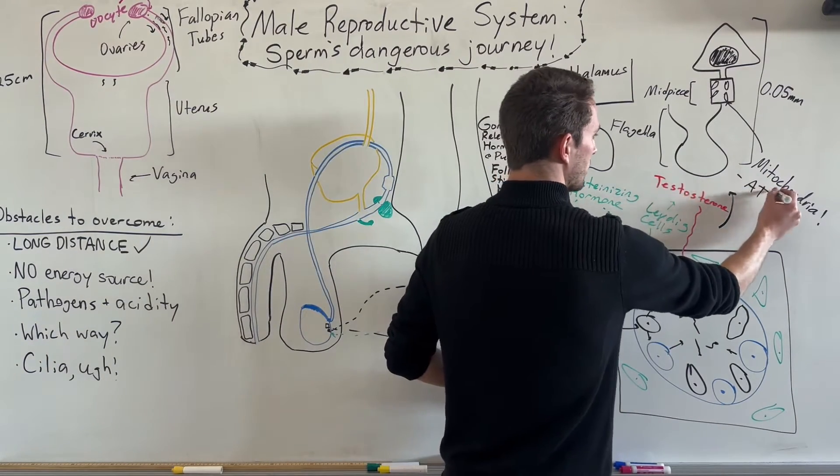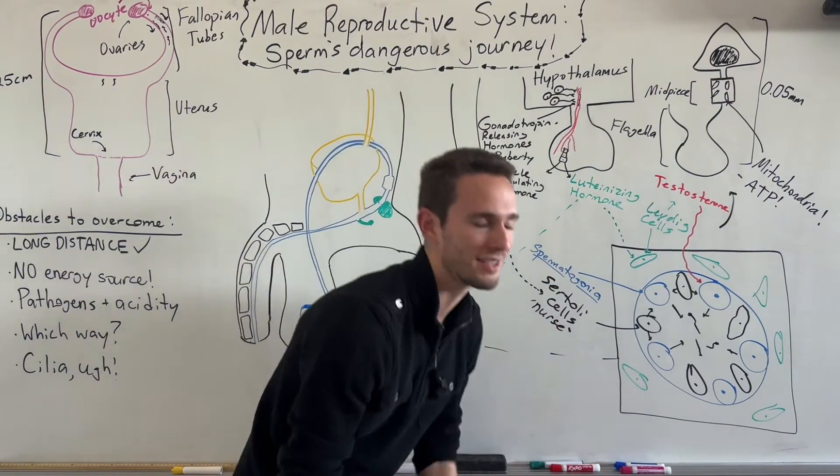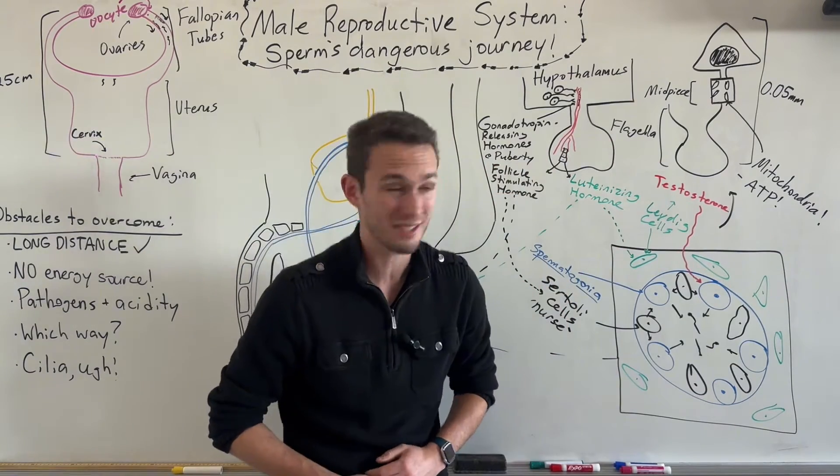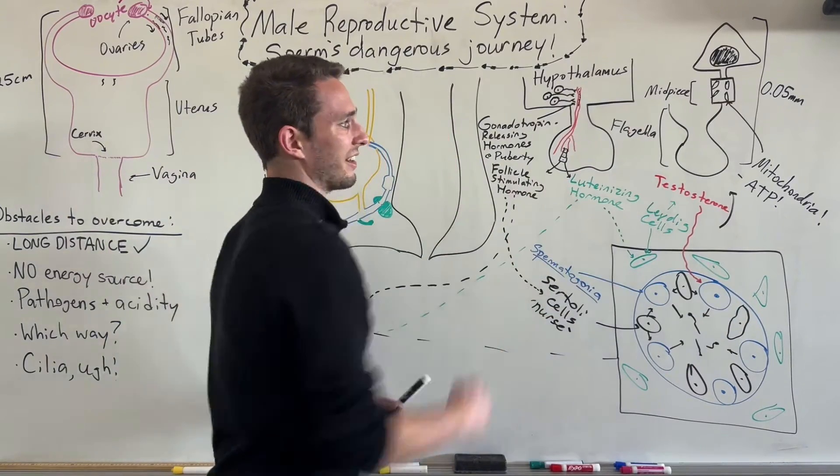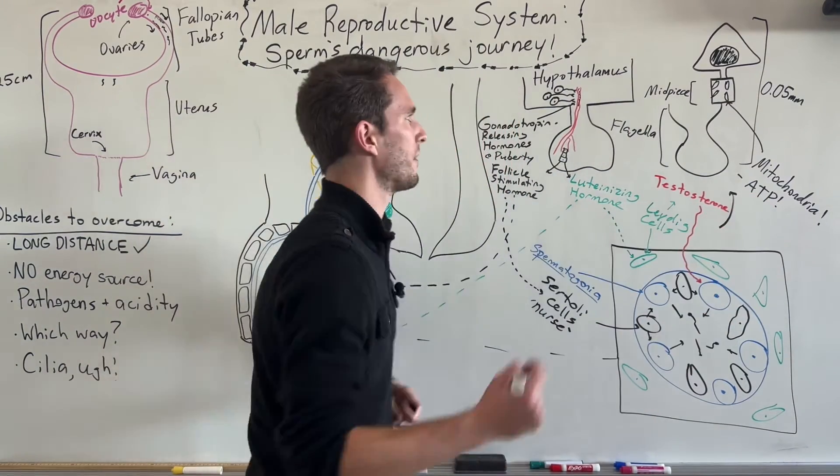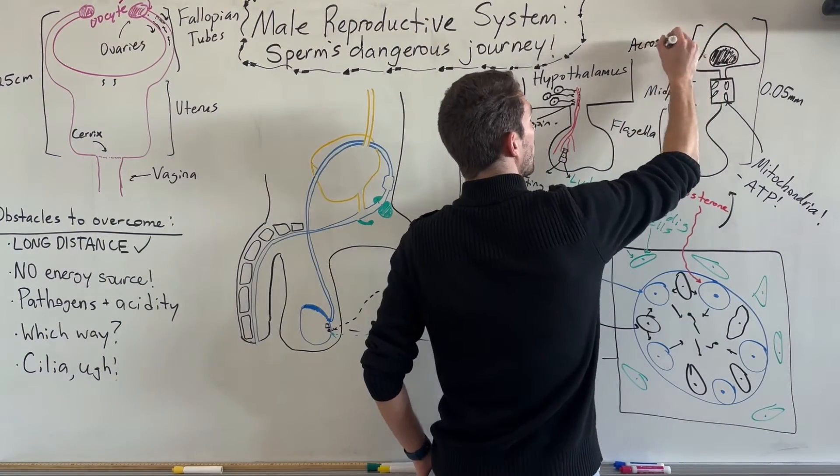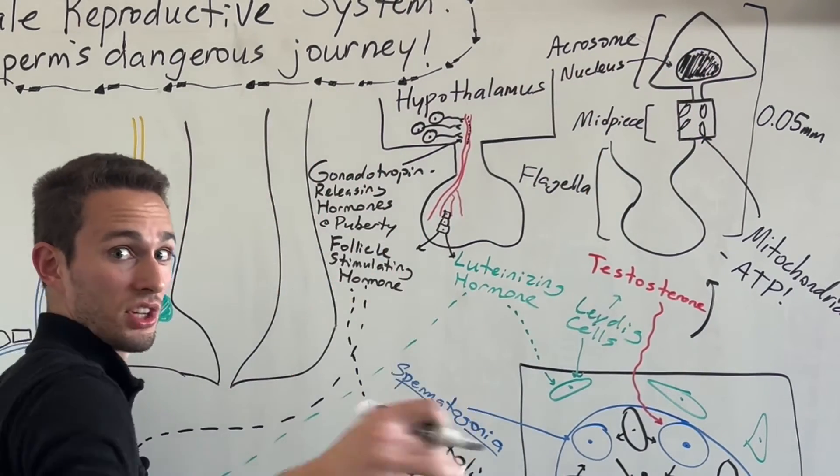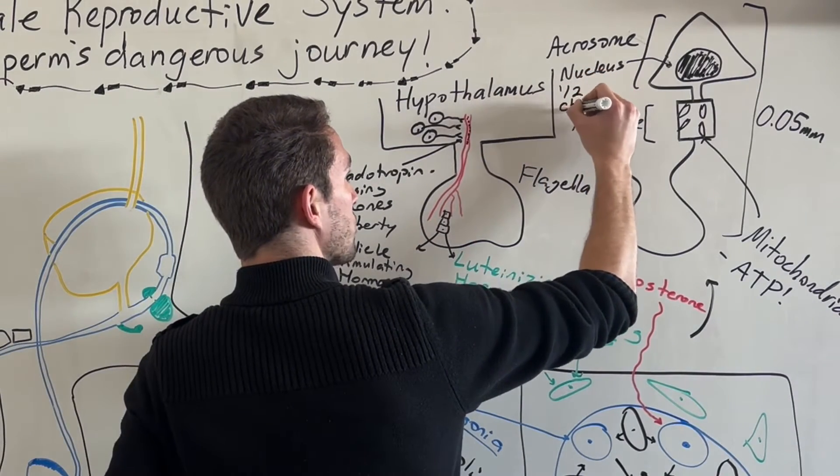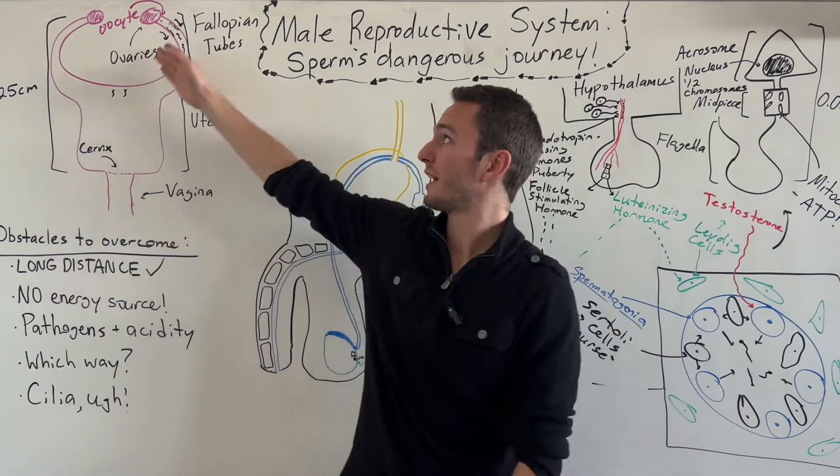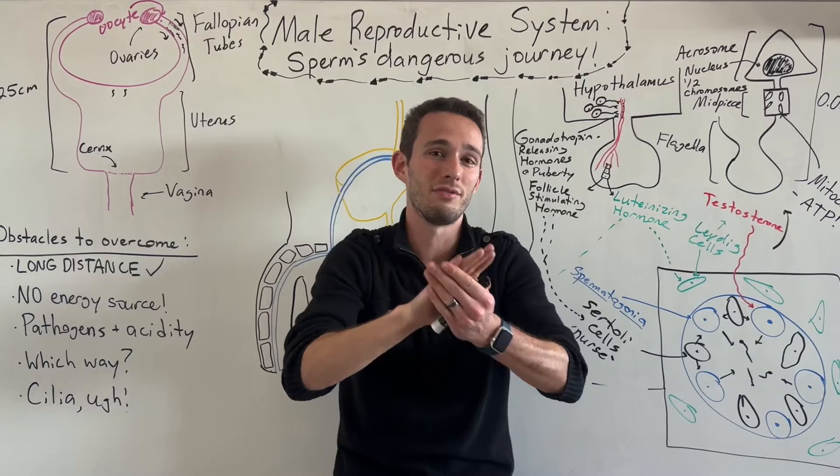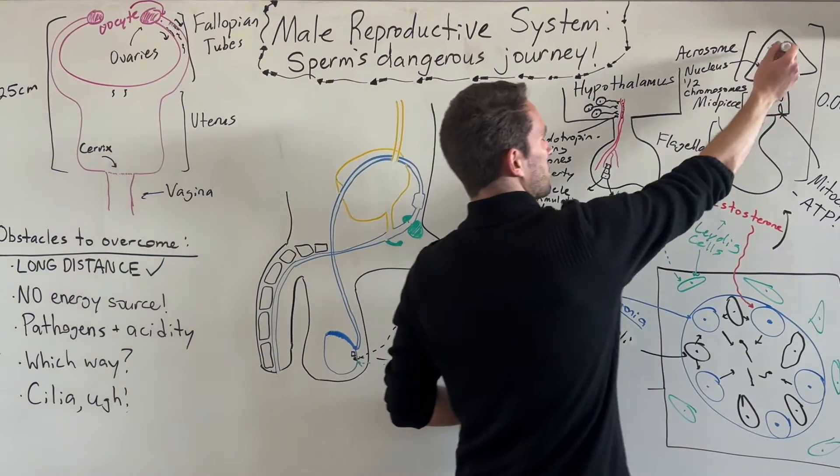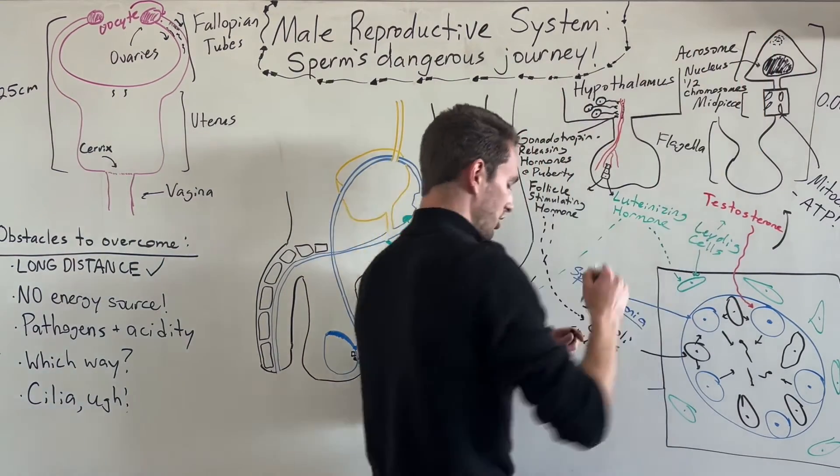In the sperm itself, we're going to have this little part called the midpiece, and the midpiece is going to be jam-packed with a bunch of organelles. We're talking about energy, so this is going to be jam-packed with your favorite organelle, the mitochondria, which is the powerhouse of the cell. The mitochondria makes ATP, which is the energy currency for the cell. But if you've watched my ATP video, you know that we can only make ATP if we have a fuel source like a sugar and oxygen. We don't have any sugars available for this, so that's a problem we're going to fix later.